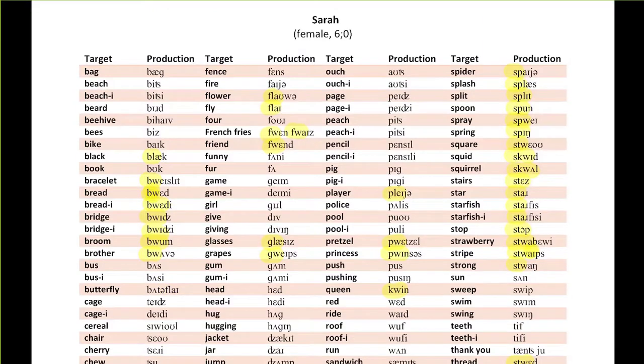The process for identifying an initial cluster inventory is very similar to identifying a segmental phonetic inventory, except we're just looking at initial clusters. We're looking for a two-time occurrence based on the child's productions to merit including a sound in the inventory.